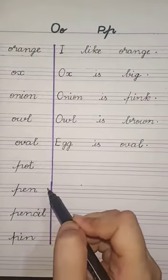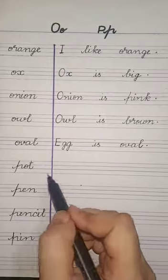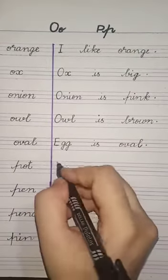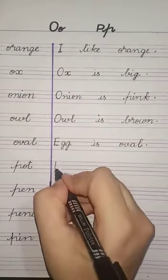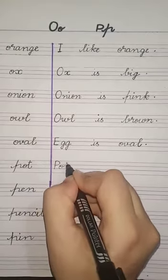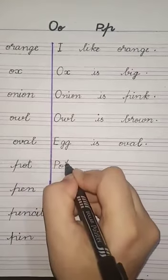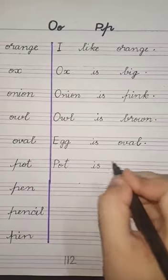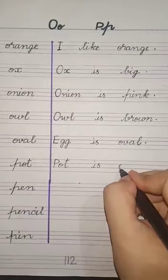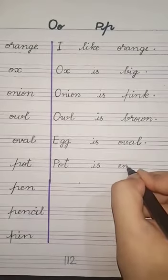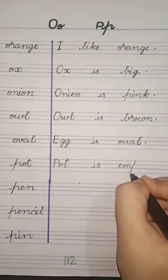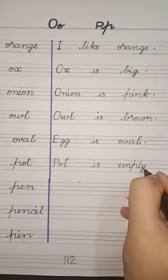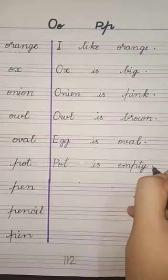Humne Paa wale sentences complete karene hai. First hai Paa ka word: Port. Port is empty. First write capital P-O-T, port. Then 'is'. E-M-P-T-Y, empty. Last, full stop.